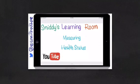Welcome back to Smitty's Learning Room. Today we're going to have a look at how priority issues for Australia's health are identified, specifically looking at measuring health status and the role of epidemiology.